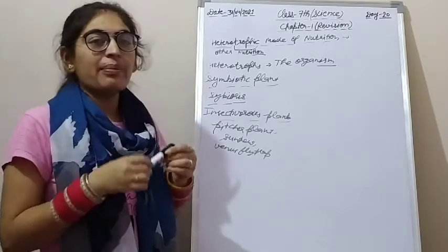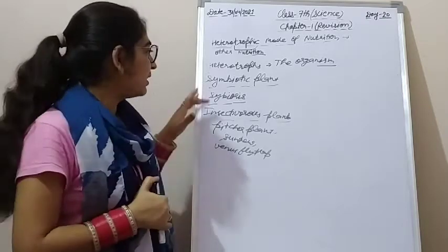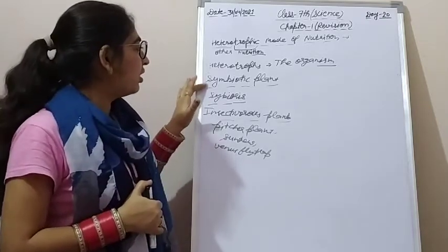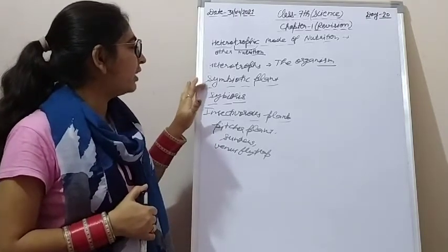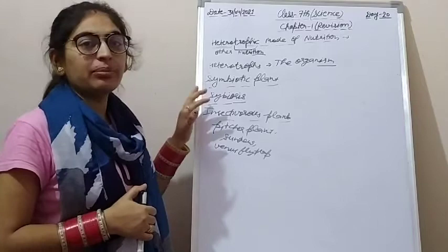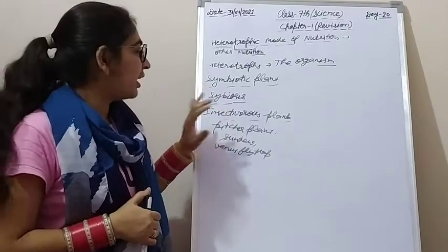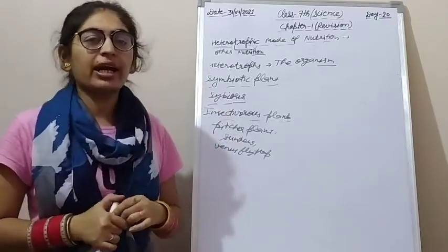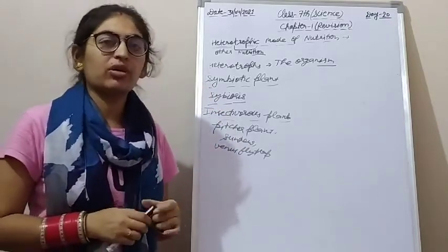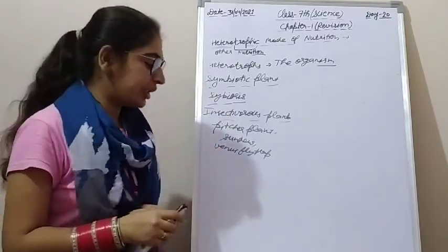Next is parasitic plants. So, in total there are four types of heterotrophic modes of nutrition: saprophytic, symbiotic, insectivorous, and parasitic.